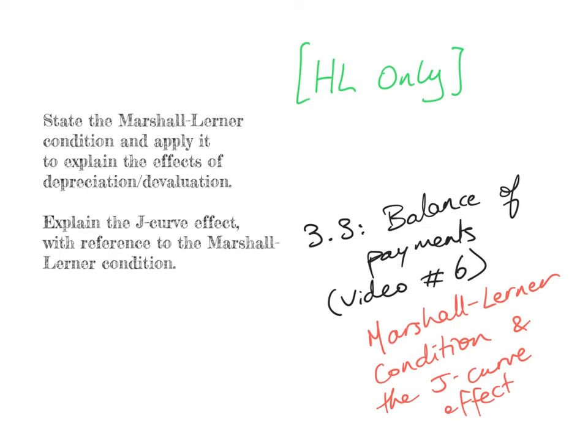This is video number six of the Balance of Payments mini-series. This video will have high-level only content. In this video, I'm going to explain the Marshall-Lerner condition and the J-curve effect.